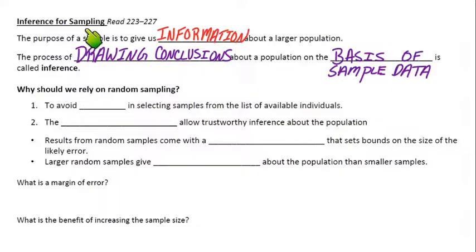We were going to try to make an estimate as to the true proportion of the red beads just based on our samples. So why should we actually rely on random sampling? Because the whole foundation of statistics is built on being able to actually do things randomly. First of all, the biggest reason is so you can avoid bias in selecting samples from the list of available individuals.